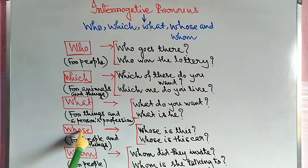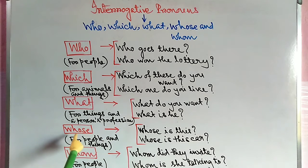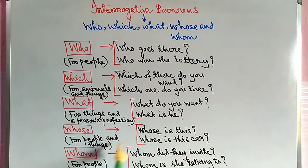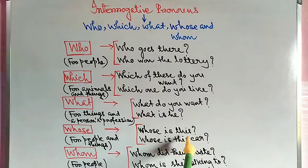Next, whose. Whose is used for people and things. Whose — people ebong kono jinnisher khetre vabhar kara hoi. For example, whose is this? Whose is this car?